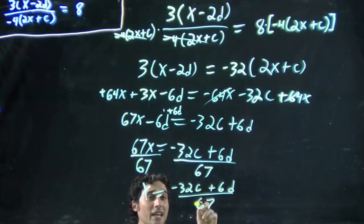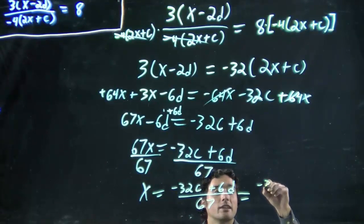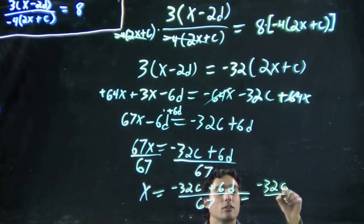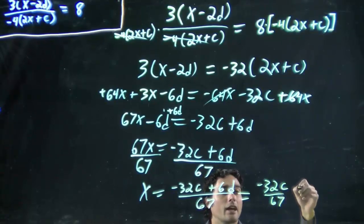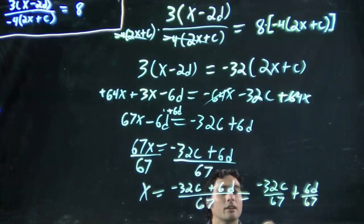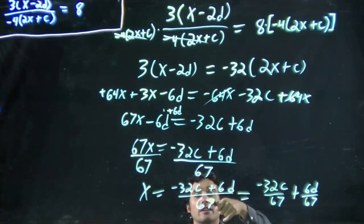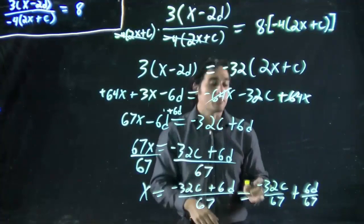And in this case, by the way, it would be the same as writing this right here. We could also rewrite this as minus 32c over 67, and plus 6d over 67. Since the 67 is on the bottom, we can split them. When you have it on the top, you can't. So, these two things are equivalent, whichever way you prefer to write it.